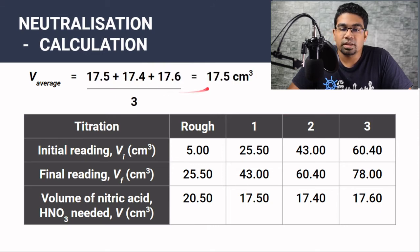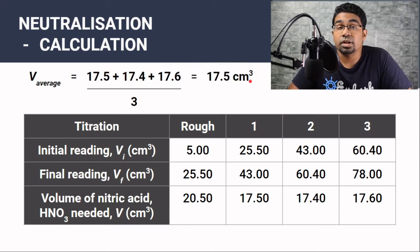We add all three volumes together and we divide it by three. So the average that we will get here is 17.5 centimeter cubes. Once we have this volume, we can proceed with the calculation.